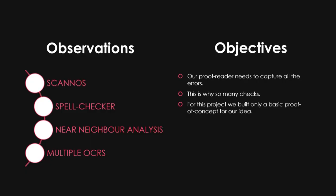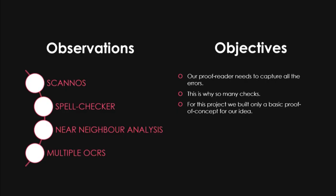Before starting the project, we thought about our main objective. Our main objective is to create a proofreader which captures most of the errors. It can't leave some errors, because as a normal human tendency, if we have highlighted words coming in front of us, we won't bother to look at other instances as sources of error. So we jotted down some observations to capture as many errors as we can.